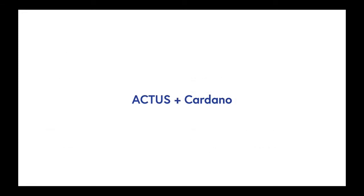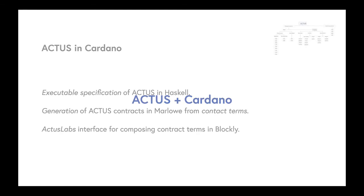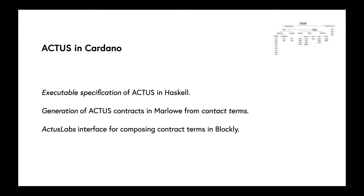What about ACTUS and Cardano? How do we use Marlowe to describe the ACTUS standard? We provide an executable specification of ACTUS. We have built in Haskell a model of how that specification is described so that we're able to take ACTUS descriptions and deal with them directly in Haskell.